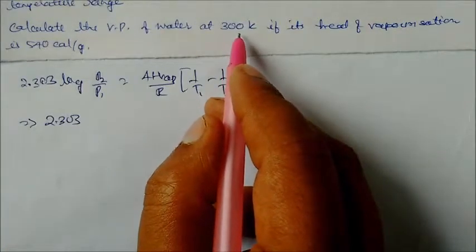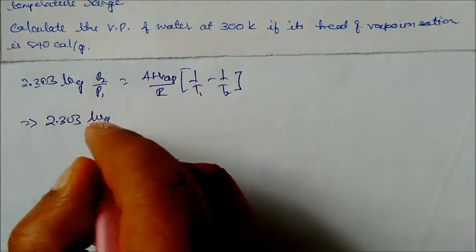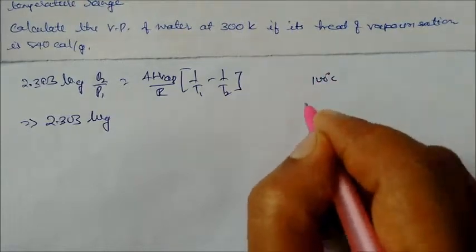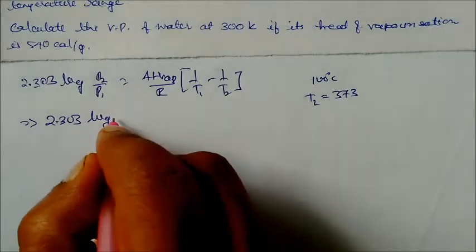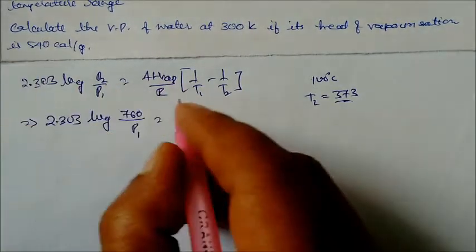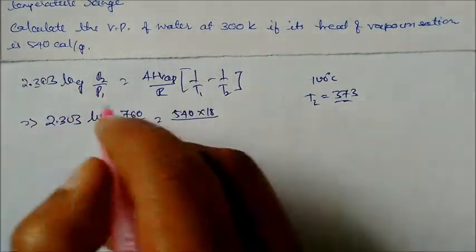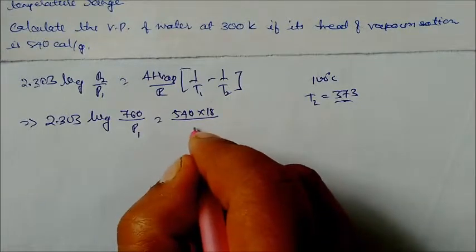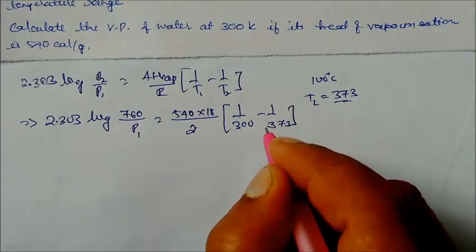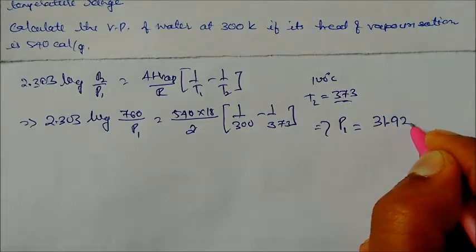We need to find P2 at 300 K. The boiling point of water is 100°C, so T2 = 373 K, at which P2 = 760 mmHg (1 atm). The heat of vaporization is 540 cal/g; converting to per mole: 540 × 18 = 9720 cal/mol. Using R = 2 cal/mol·K with 1/300 − 1/373, solving gives P1 = 331.92 mmHg. This is our answer.